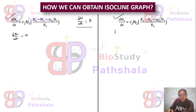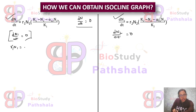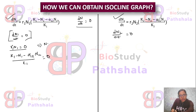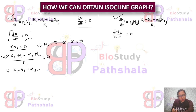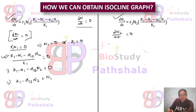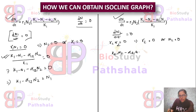Setting dN1/dt = 0: either r1·N1 = 0, meaning N1 = 0 or r1 = 0, or (K1 − N1 − α12·N2) / K1 = 0, which simplifies to K1 − N1 − α12·N2 = 0, giving N1 = K1 − α12·N2. For dN2/dt = 0: either r2·N2 = 0, or (K2 − N2 − α21·N1) / K2 = 0, giving N2 = K2 − α21·N1.